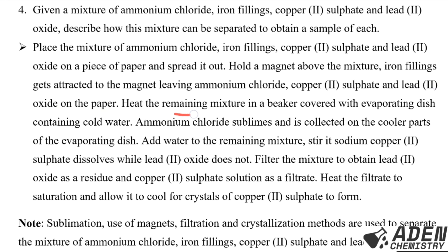Heat the remaining mixture in a beaker covered with an evaporating dish containing cooled water — ammonium chloride sublimes and is collected on the cooler part of the evaporating dish. Add water to the remaining mixture of copper(II) sulfate and lead(II) oxide and stir: copper(II) sulfate dissolves while lead(II) oxide does not. Filter the mixture to obtain lead(II) oxide as a residue and copper(II) sulfate solution as a filtrate. Heat the filtrate to saturation and allow it to cool for crystals of copper(II) sulfate to form.